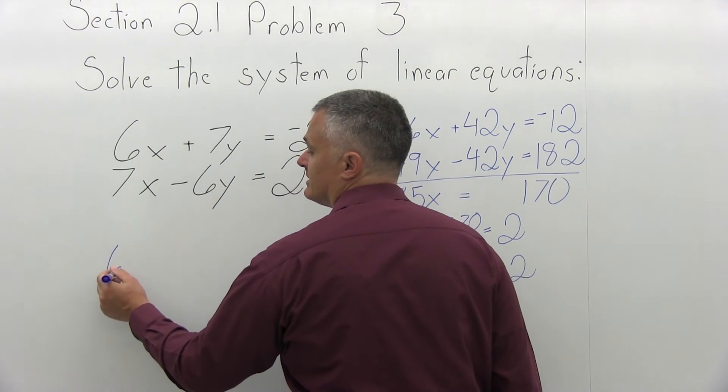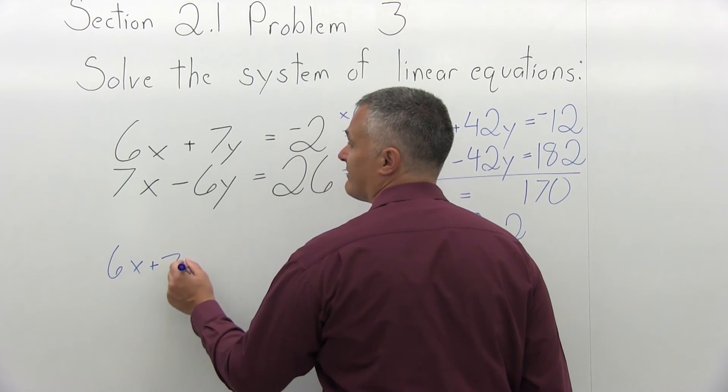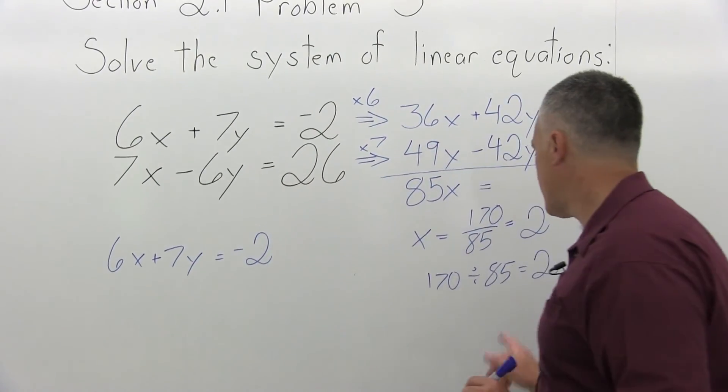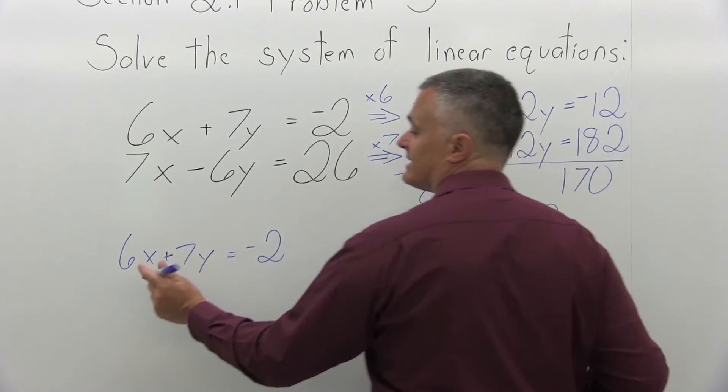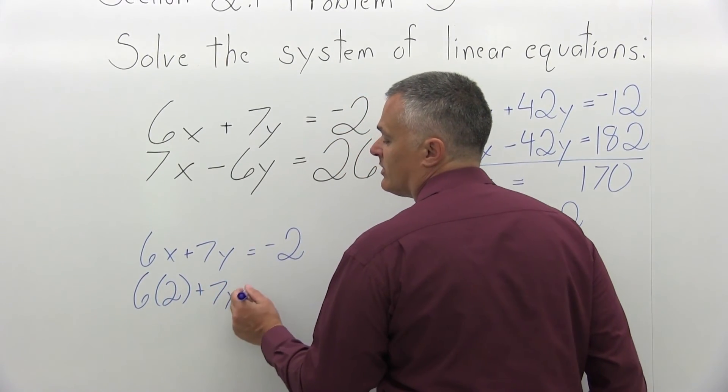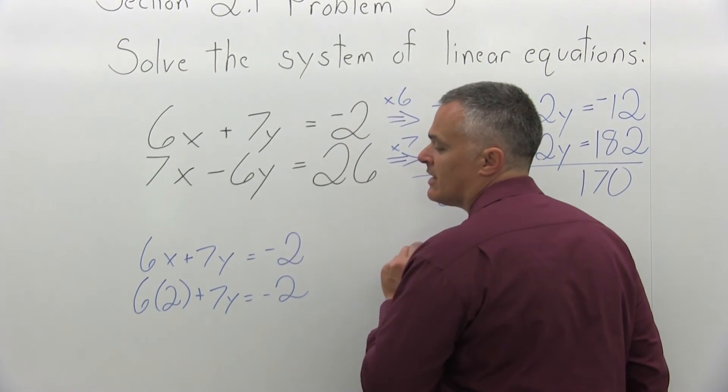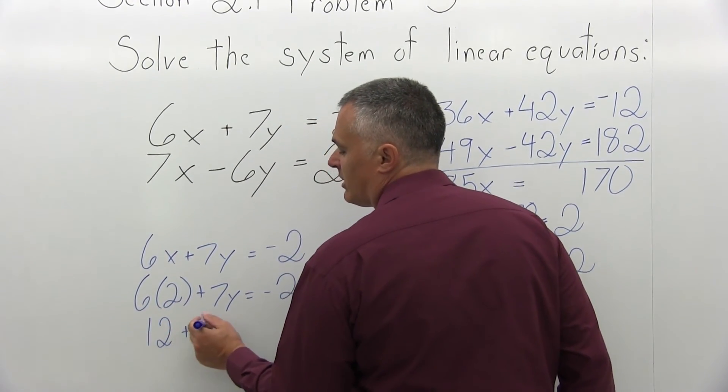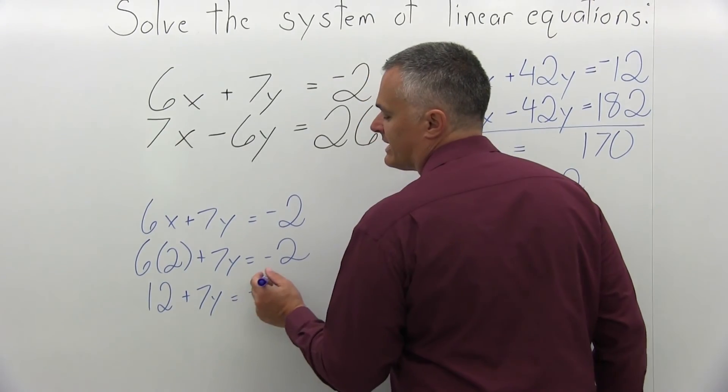The top equation is 6x plus 7y equals negative 2. And now that I know that x is 2, the 6x will become 6 times 2 plus 7y equals negative 2. 6 times 2 is 12. 12 plus 7y equals negative 2.